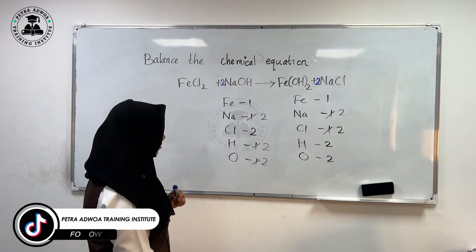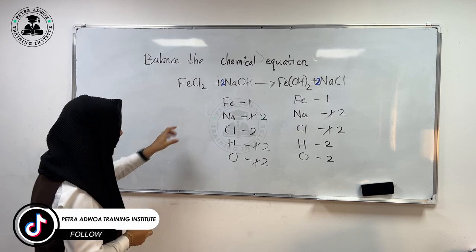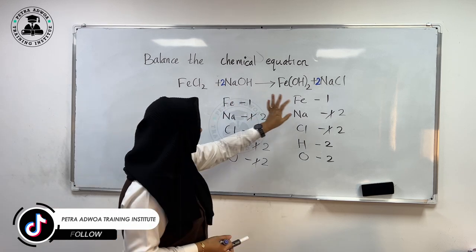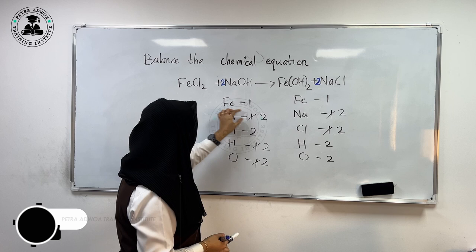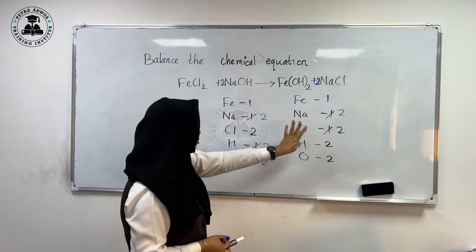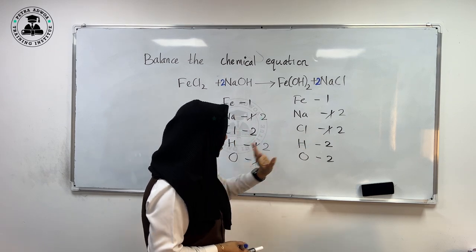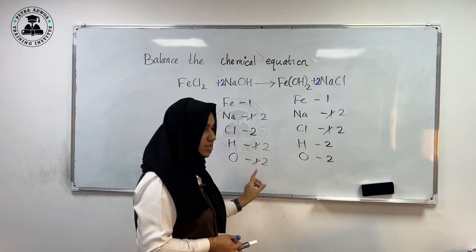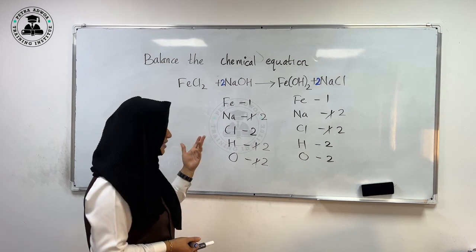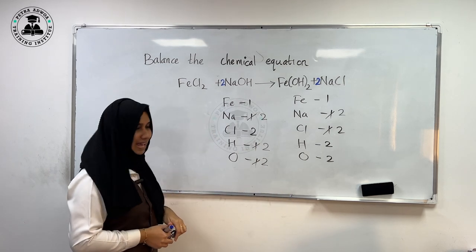Now just check the reaction. Sodium is 2 on both sides, chlorine is 2 on both sides, hydrogen is 2 on both sides, and oxygen is also 2 on both sides. That means our equation is balanced.